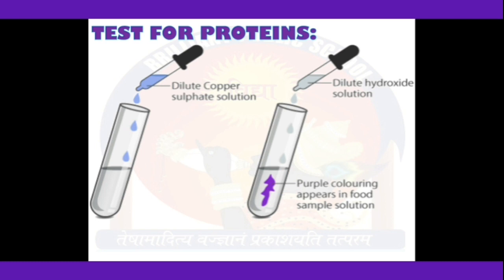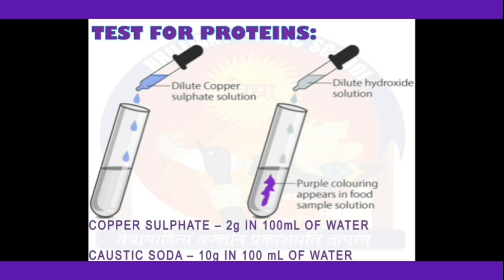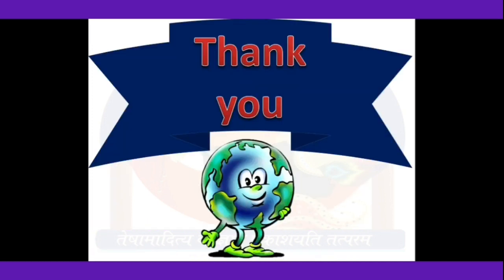Copper sulfate solution can be prepared by dissolving 2 grams of copper sulfate in 100 ml of water. Caustic soda solution is prepared by dissolving 10 grams of caustic soda in 100 ml of water. This completes the test for proteins. We will meet in the next video to cover more topics: vitamins, minerals, roughage, and water. Till then, eat healthy, stay healthy — bye bye!